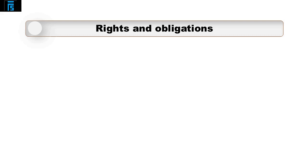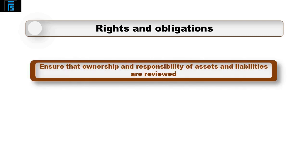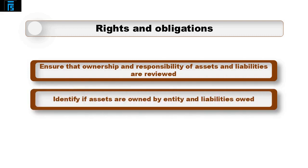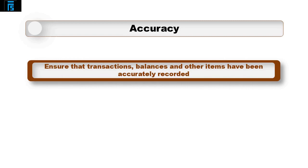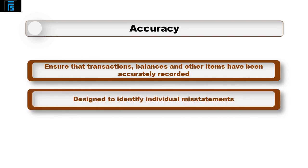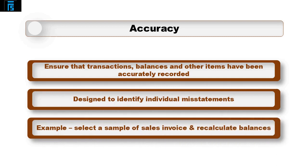The assertion rights and obligations is to ensure that ownership and responsibility of assets and liabilities is reviewed. Audit tests would be designed to identify if assets are owned by the entity and liabilities owed. An example would be the auditor inspecting invoices of assets purchased in the year to ensure they are in the company name. Accuracy is to ensure that all transactions, balances and other items have been accurately recorded, with audit tests designed to identify individual misstatements — for example, selecting a sample of sales invoices and recalculating the balances.